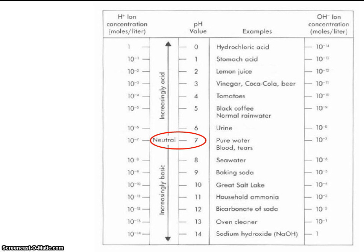Let's say we have a neutral solution. You know that a neutral solution has a pH of 7. An example of that would be pure water. And when we have a pH of 7, we've already discovered that the concentration of hydrogen ion is 10 to the minus 7th.